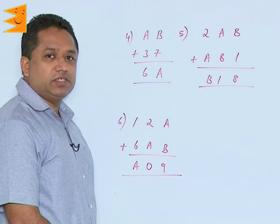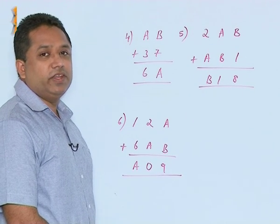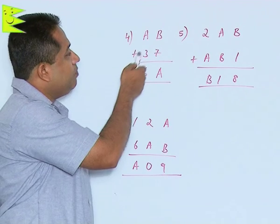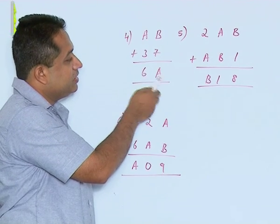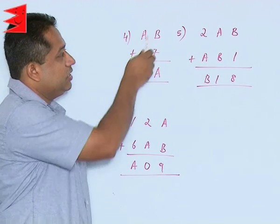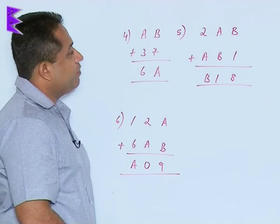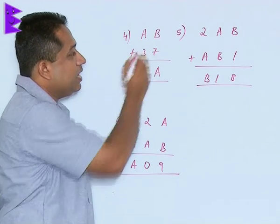We are looking at some more examples where we have to find the missing numbers. AB plus 37 is giving us 6A. So this is a two-digit number added to a two-digit number. We have to find out the value of A and B.